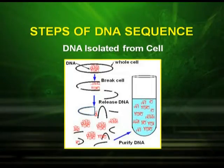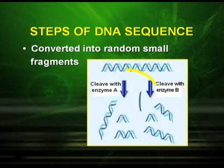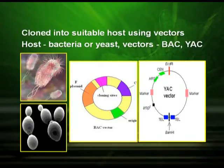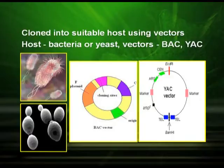The steps of DNA sequencing begin with isolating DNA from the cell — the cell is homogenized and DNA is extracted chemically. The extracted DNA is then converted into random small fragments using molecular scissors called restriction endonucleases. The fragmented DNA is cloned into suitable hosts using vectors. The hosts used are bacteria or yeast, and the vectors used are BAC (bacterial artificial chromosome) or YAC (yeast artificial chromosome), as shown in the pictures of E. coli, yeast, BAC, and YAC vectors.